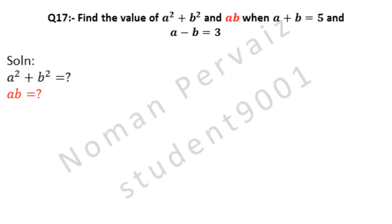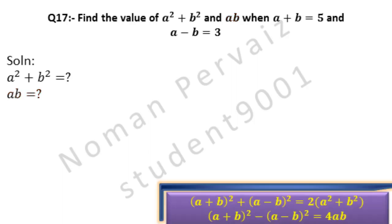We will show two formulas that will be used to find these two values. The first formula is: (a + b)² + (a − b)² = 2(a² + b²). The second formula is: (a + b)² − (a − b)² = 4ab.